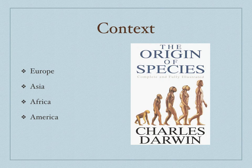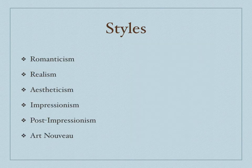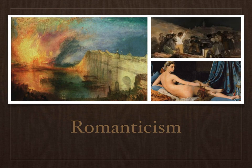So that's your context — that's your overview of what's going on in the world. For this lecture, the artistic styles I want you to know are: Romanticism, Realism, Aestheticism, Impressionism, Post-Impressionism, and the Art Nouveau. We'll begin with Romanticism.